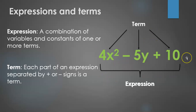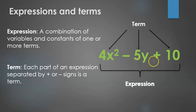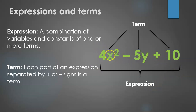That's better understood with an example. On the right side, we have an expression 4x squared minus 5y plus 10. It has three terms. The first term is 4x squared, the second term is minus 5y, and the third term is plus 10. A term is a part of the expression separated by the plus or minus sign.